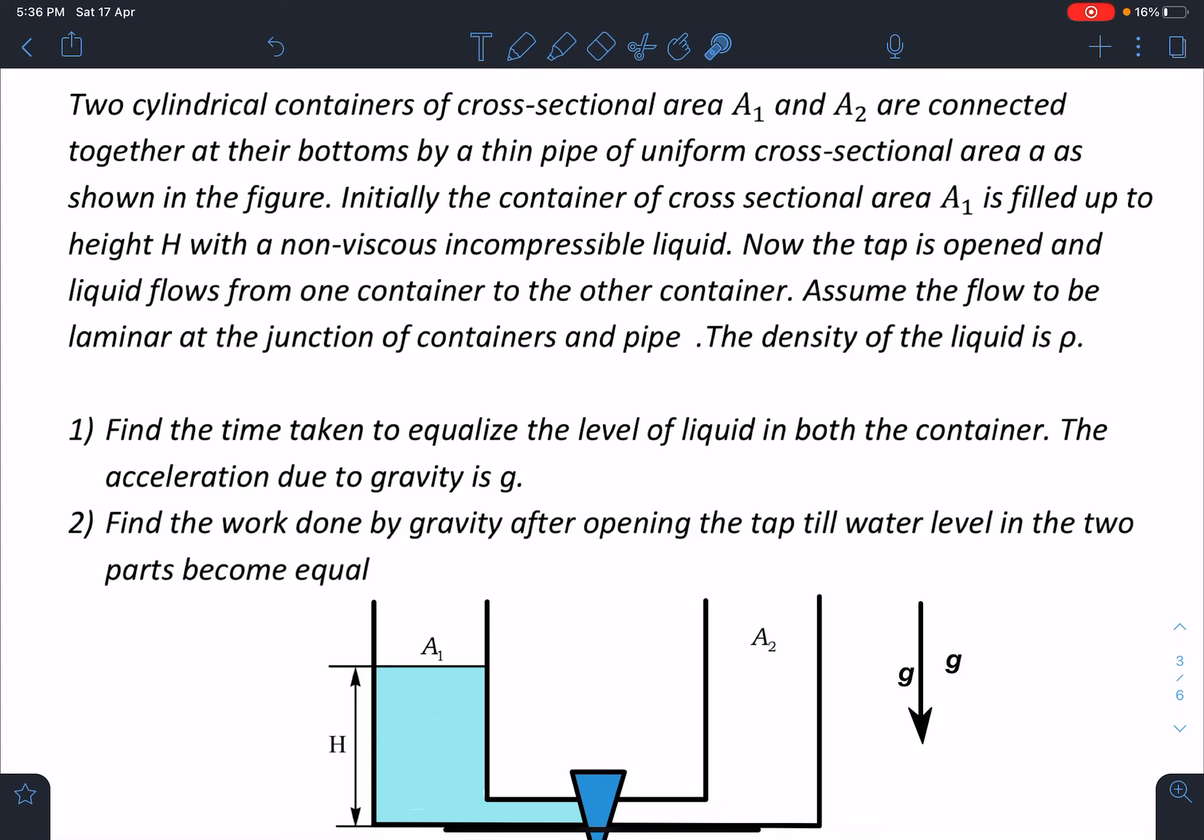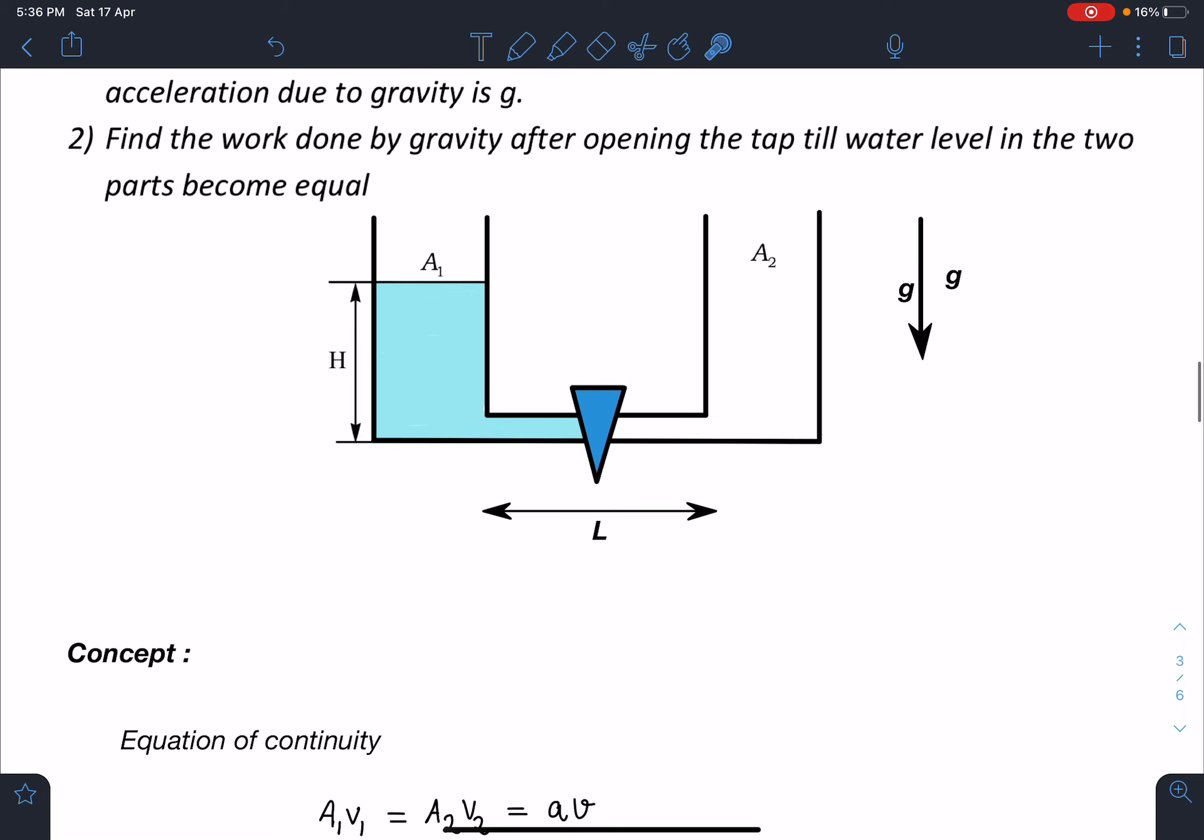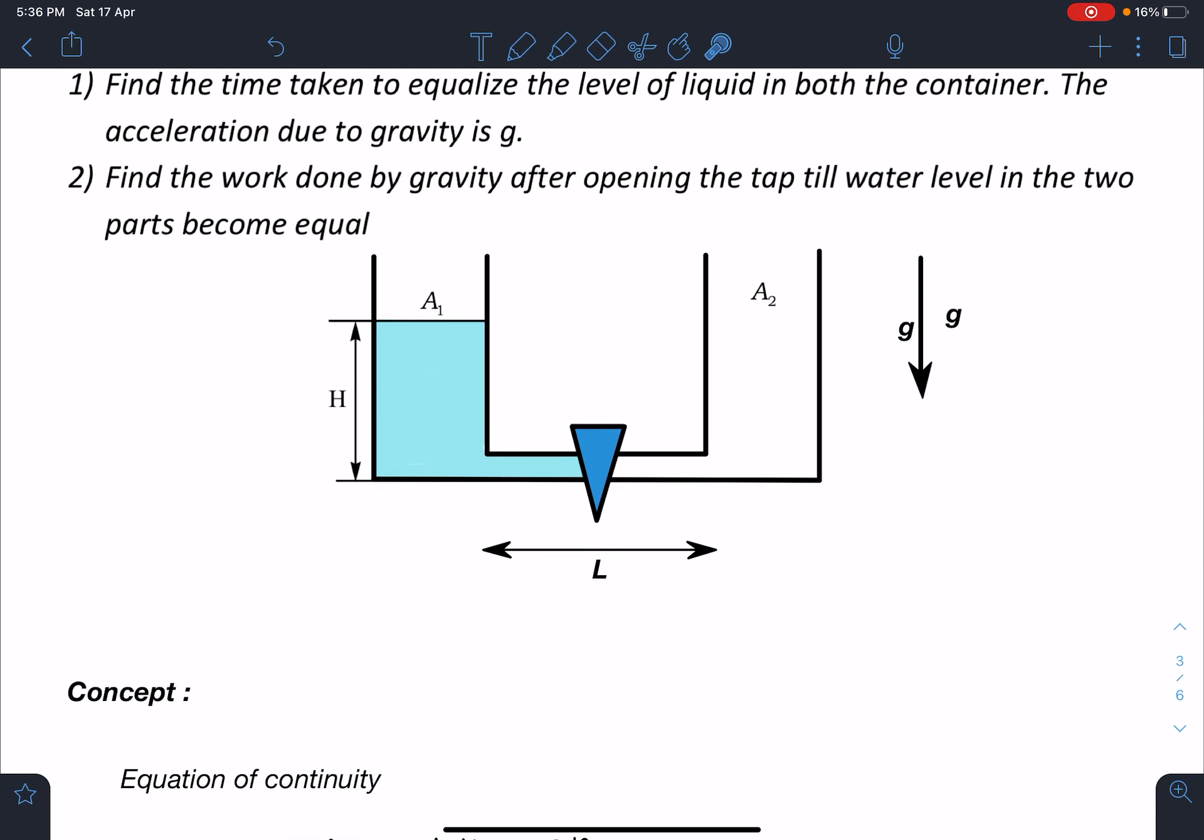Here this is the setup. As you can see here, there are two cylinders with different cross-section areas. On one side there is liquid up to height H. We are going to ignore this much volume of the liquid - it's a very thin pipe - and there is a stopper or you can say the tap.